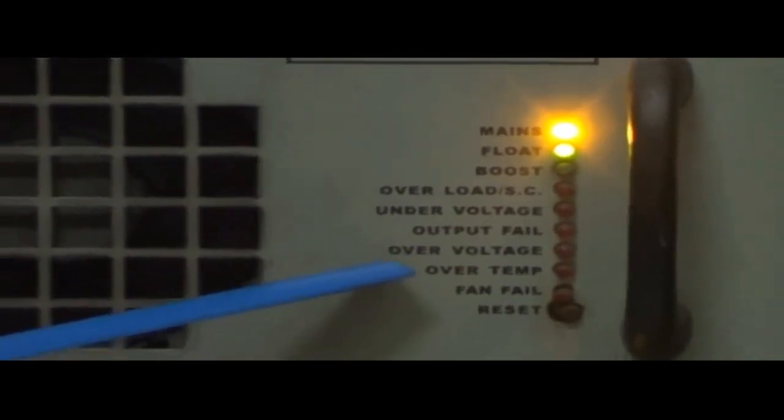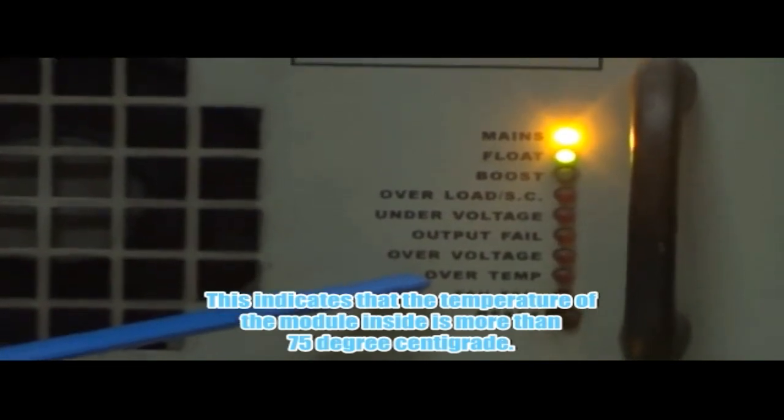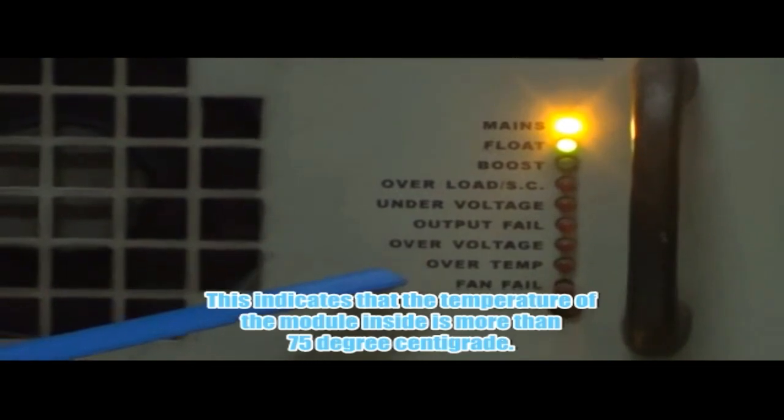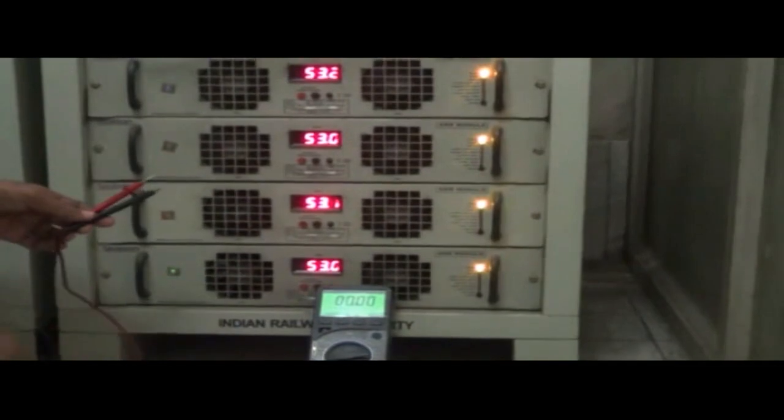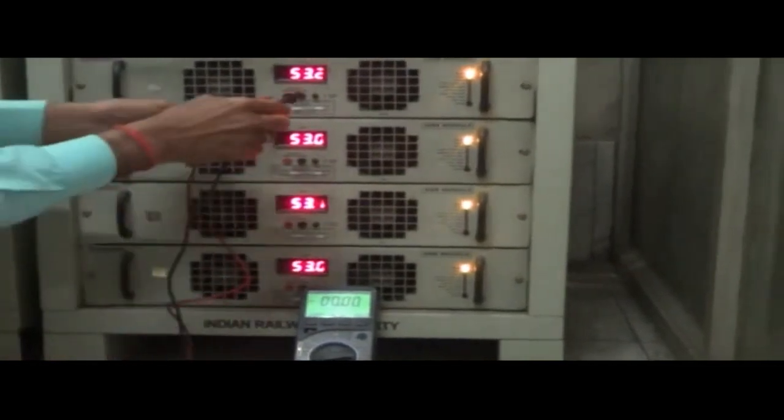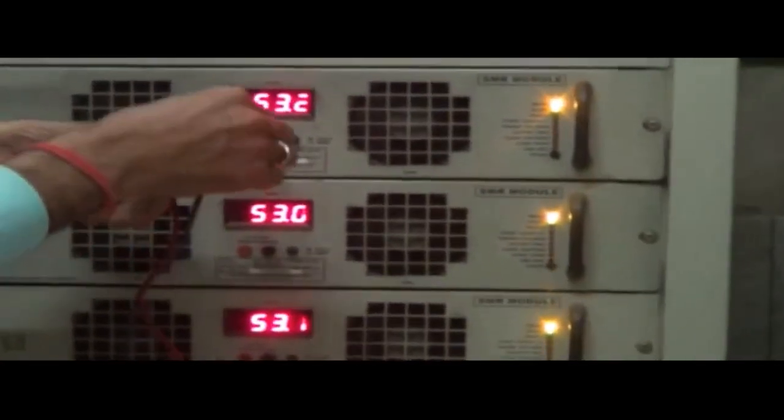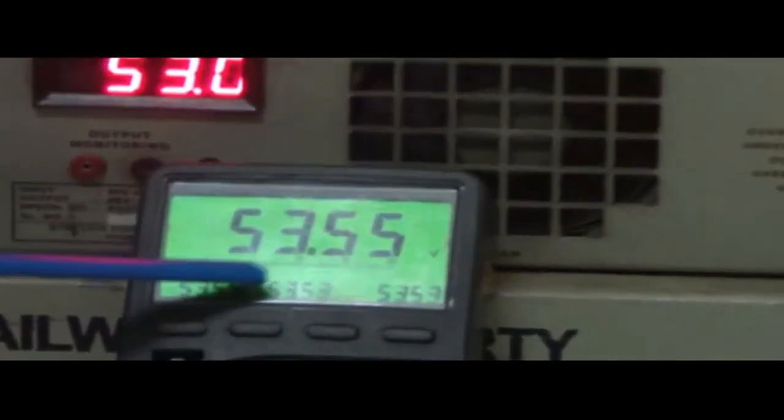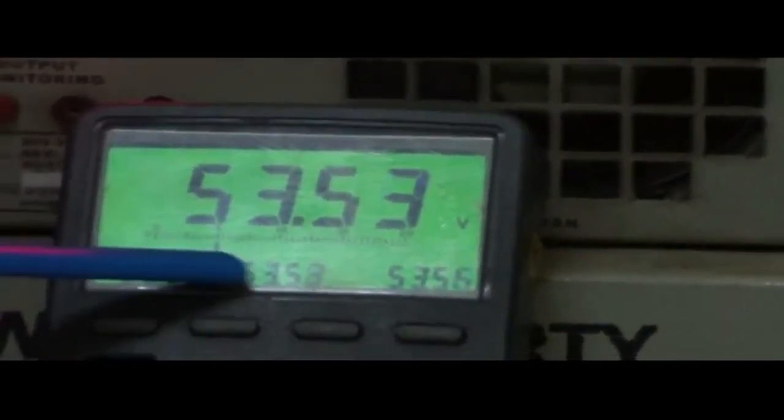Over temperature: This indicates that the temperature of the module inside is high. Each SMR has a display system to display its output voltage. Other than that, each SMR has two ports for measuring voltages with the help of a multimeter. Current can also be measured by pressing a switch provided on SMRs.